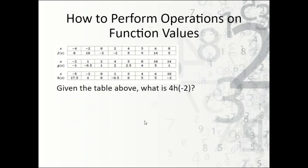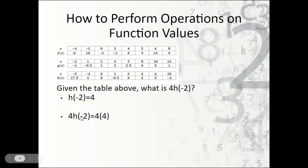Let's look at another example. What is 4 times h of negative 2? Looking at the table, when h is negative 2, y is 4. So 4 times h of negative 2 is the same thing as 4 times 4, and 4 times 4 is 16.